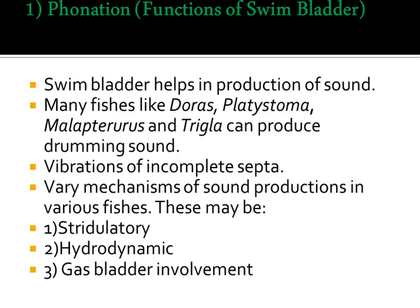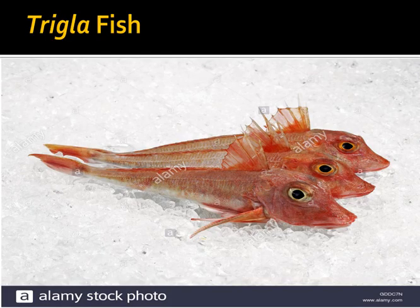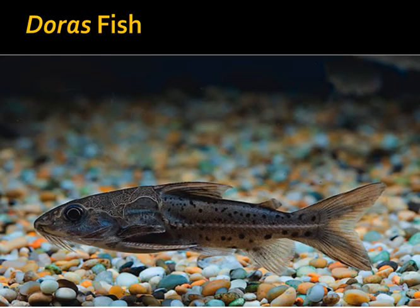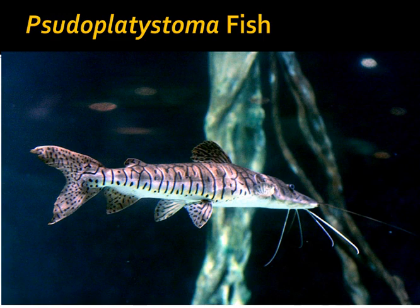Many fishes use the swim bladder to help produce drumming sounds, including Doras, Pterodoras, Thalassophryne, Melapteurus, and Trigla. Vibrations of incomplete septa vary the mechanisms of sound production across species — these may be stridulatory, hydrodynamic, or involve the gas bladder. Trigla is shown as an example of a fish that produces sounds.